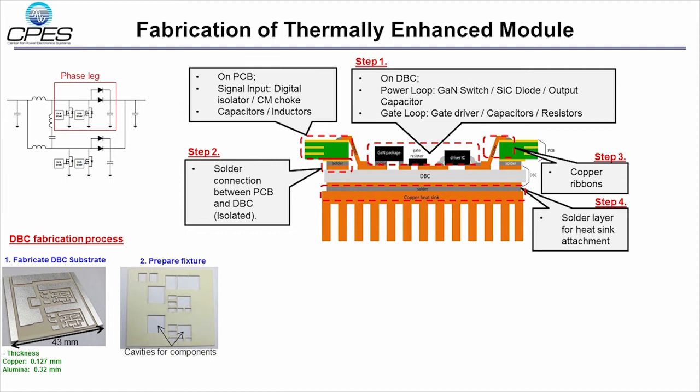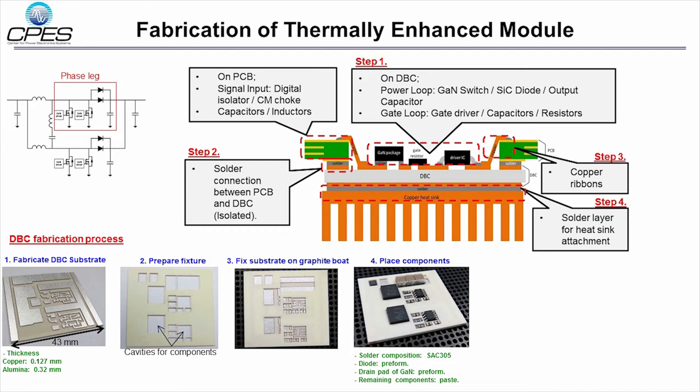The fixture was prepared that has cavities for components, so the components can be aligned during vacuum reflow process. This fixture was placed on DBC. This DBC was fixed on the graphite plate for the vacuum reflow process. Components were placed in cavities with SAC 305 lead-free solder.